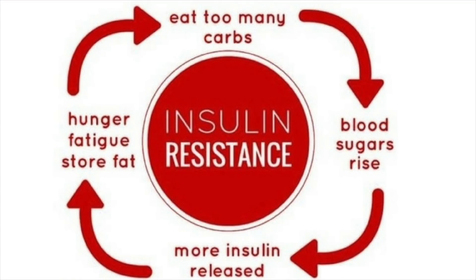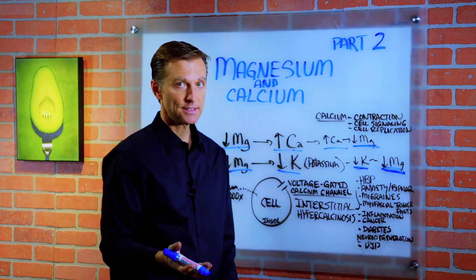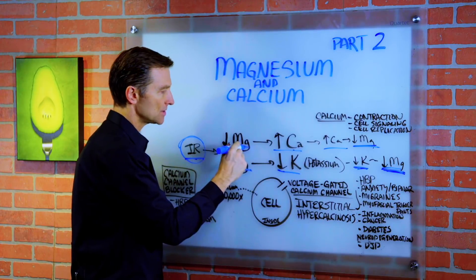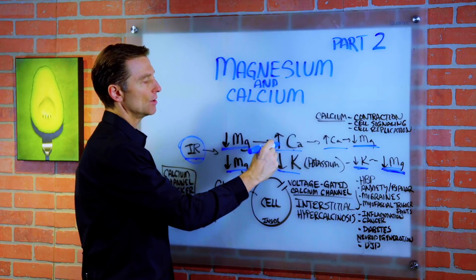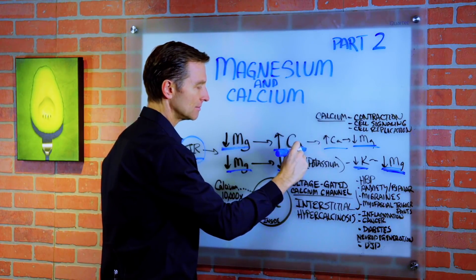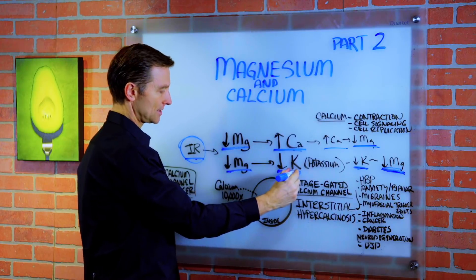If you have insulin resistance, which most of the population has, you'll end up with a magnesium deficiency, you'll have excess calcium, and you'll have low potassium.